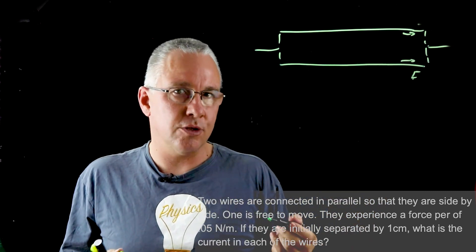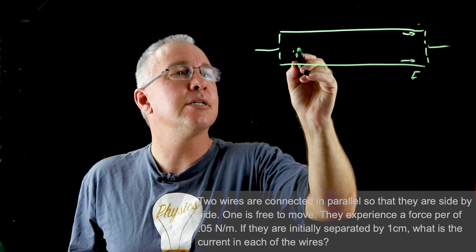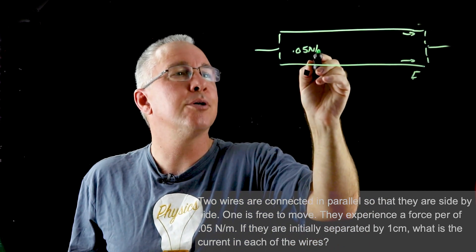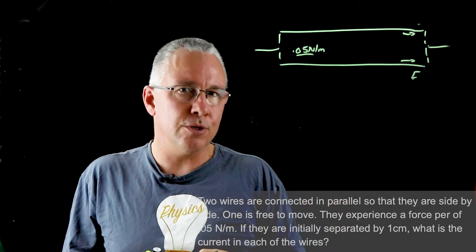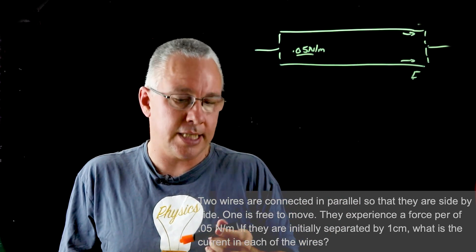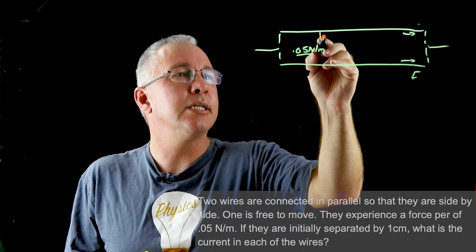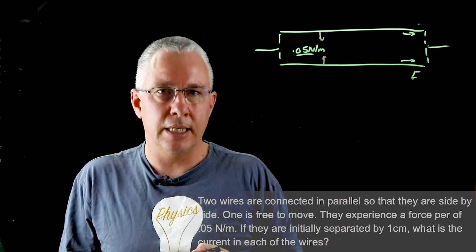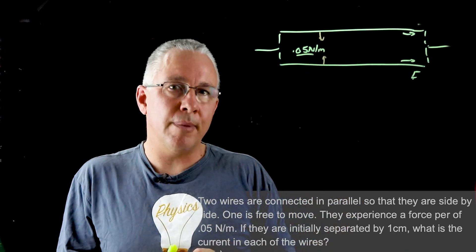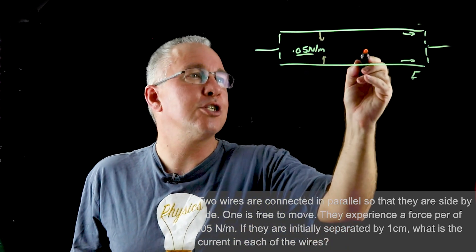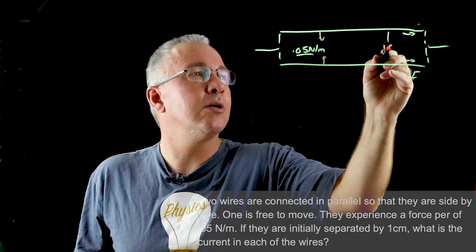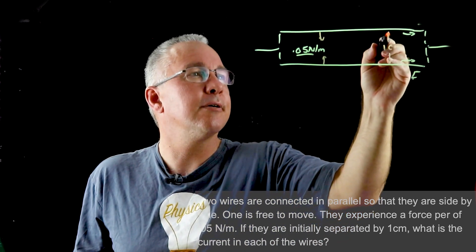We know the force between them is equal to 0.05 newtons per meter. That force is a force of attraction, so these forces are going to be wanting to pull these two wires in. The only remaining thing to write down is the separation between them, and we know that the separation is only one centimeter.